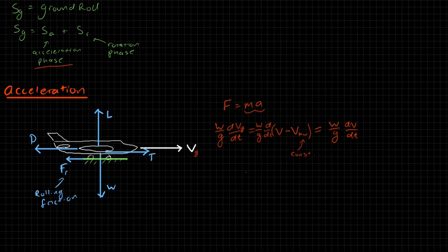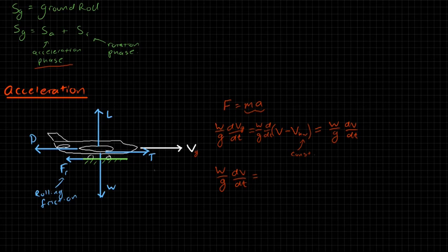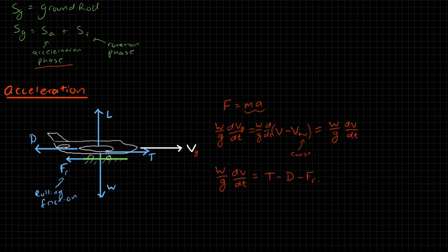So our mass times acceleration — W over g times dV/dt — equals the sum of forces in the direction of travel: thrust minus drag minus the rolling friction force F sub r. We'll call this equation 'star' because we want to remember it.